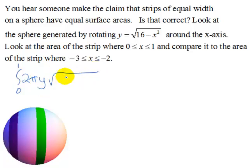Then we'll have the square root of 1 plus the derivative of this function. So let's find that. y prime is going to be 1 half times 16 minus x squared to the negative 1 half, and then multiply by the derivative of what's inside which is negative 2x.